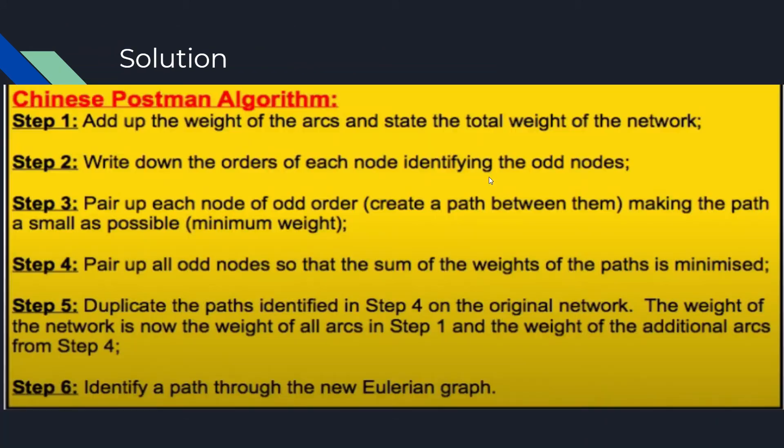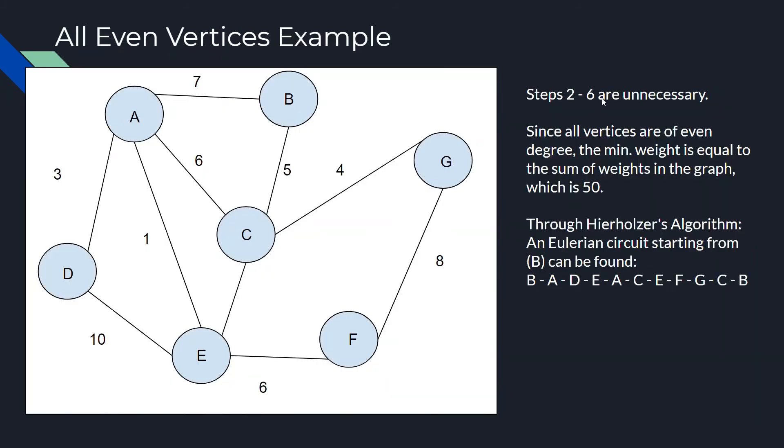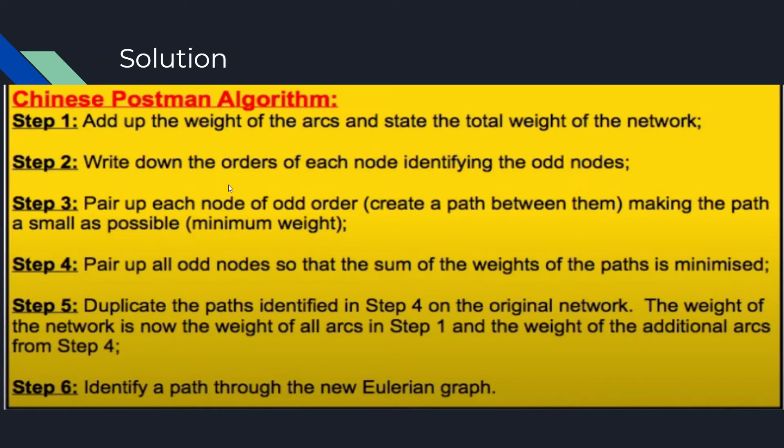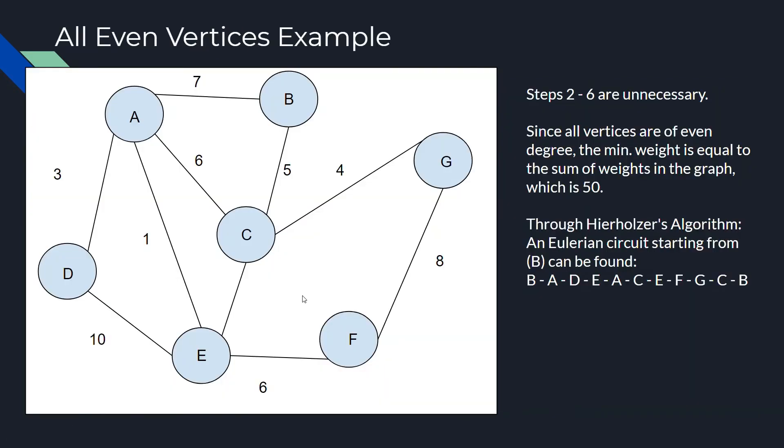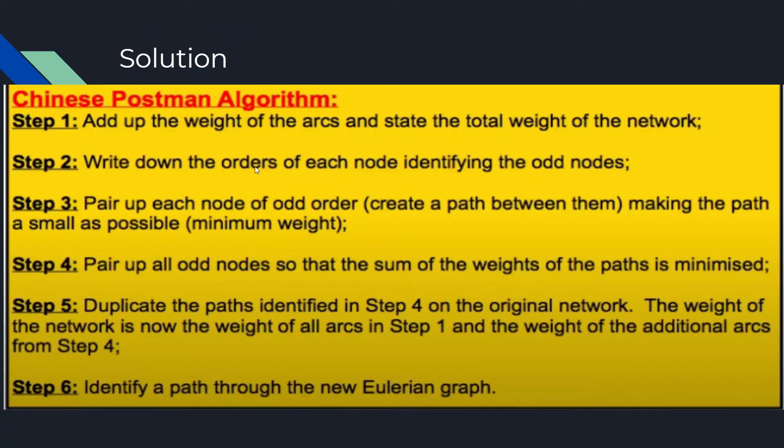Hence making steps two to five unnecessary for our solution. So, since we know steps two to five are unnecessary because we have no odd nodes, all we have to do is step one, add all the weight of the edges and state the total weight of the network.